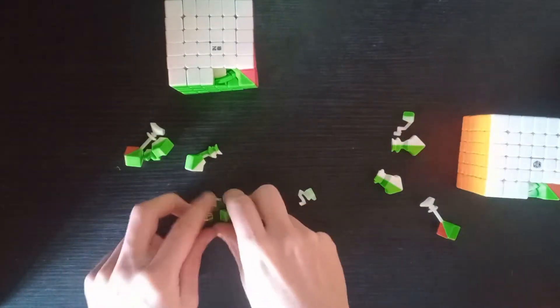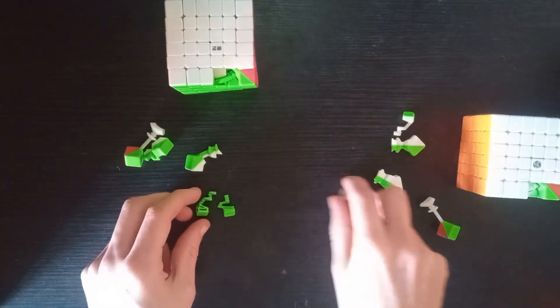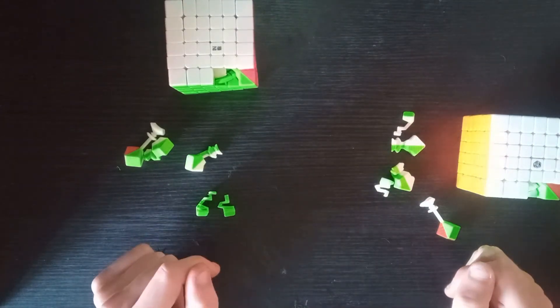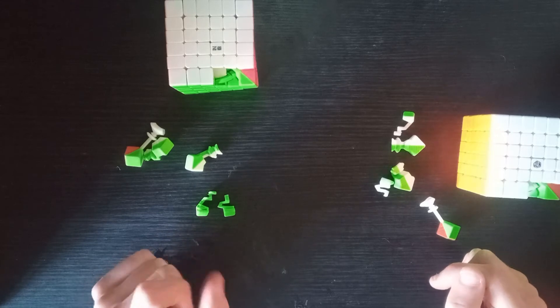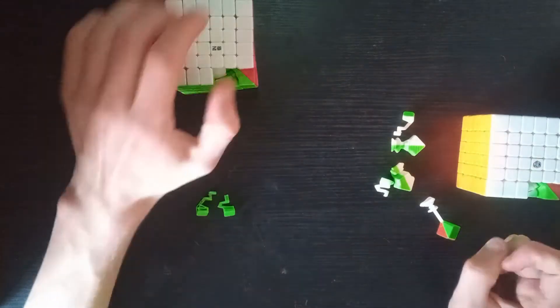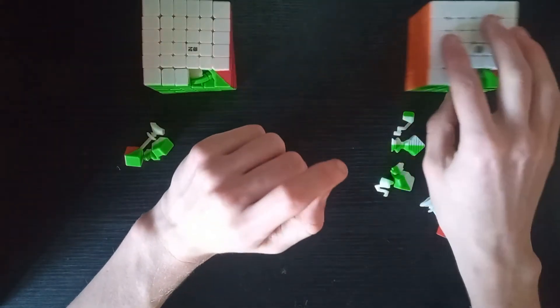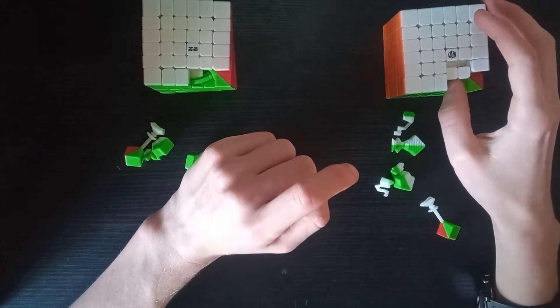So basically, the Chifan S2 is a pretty much complete replica of the Shadow V2M. The only things they've changed are the plastic and the magnets.